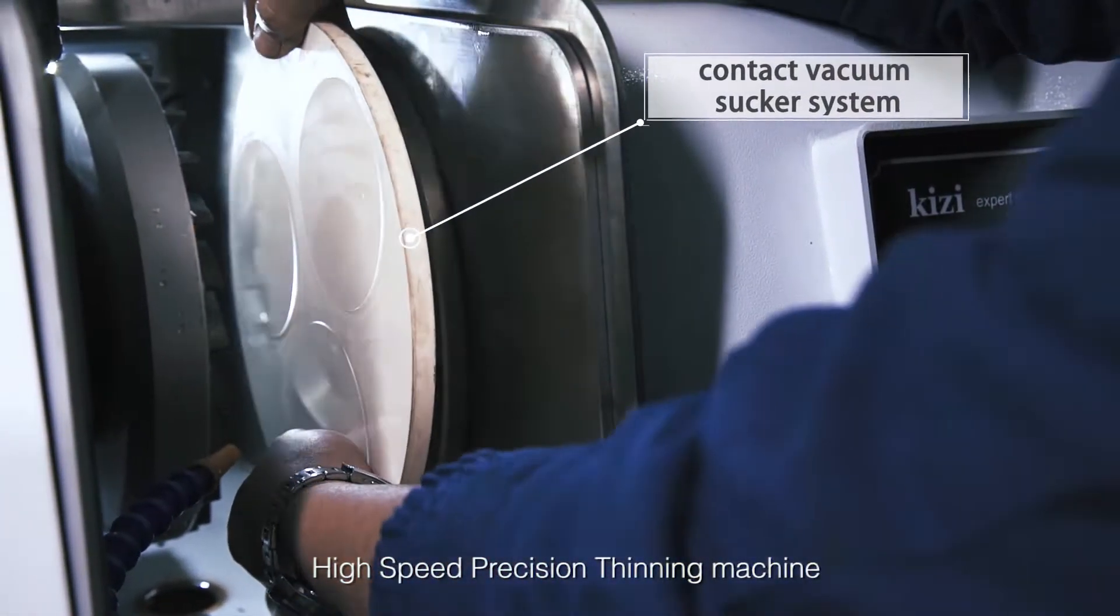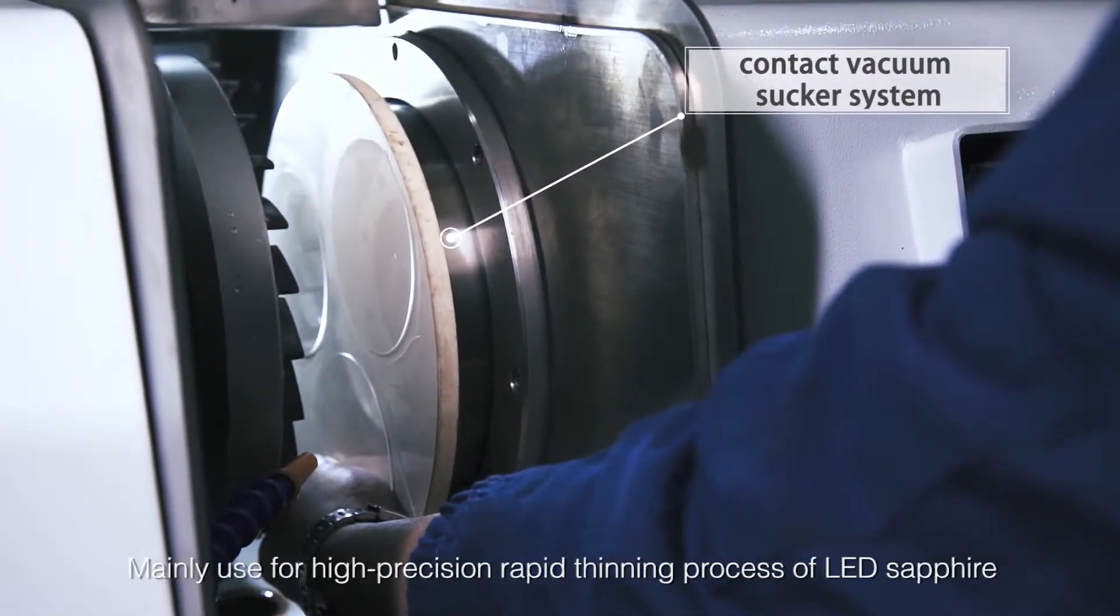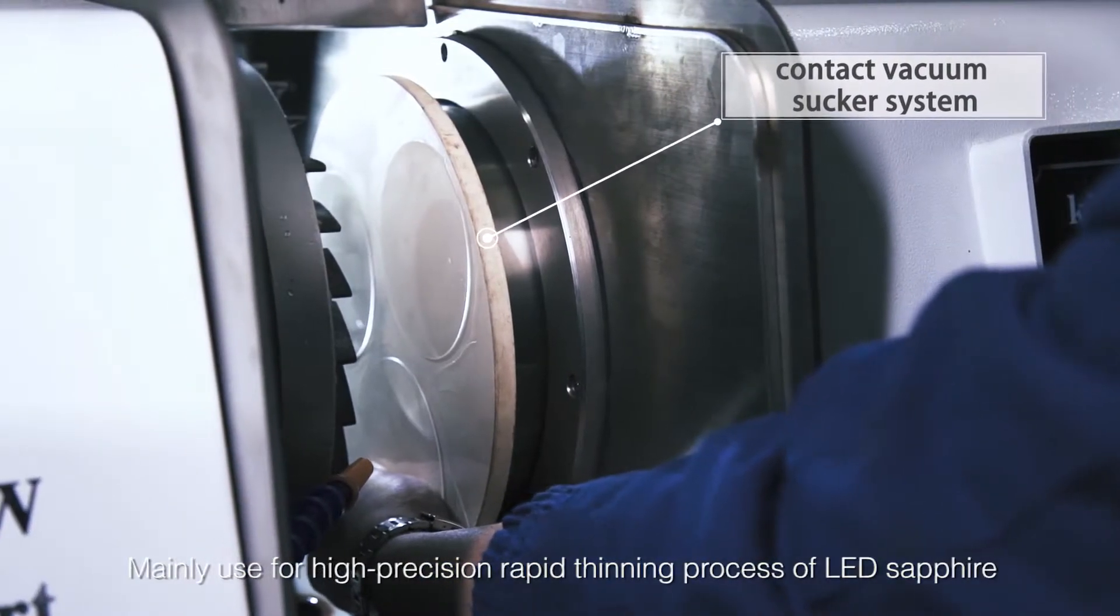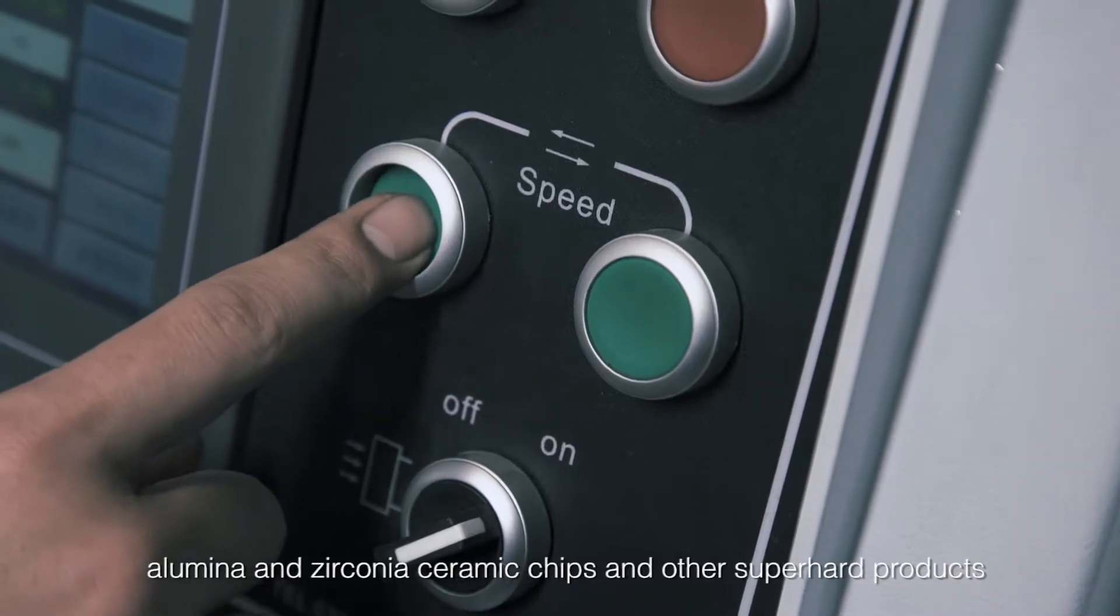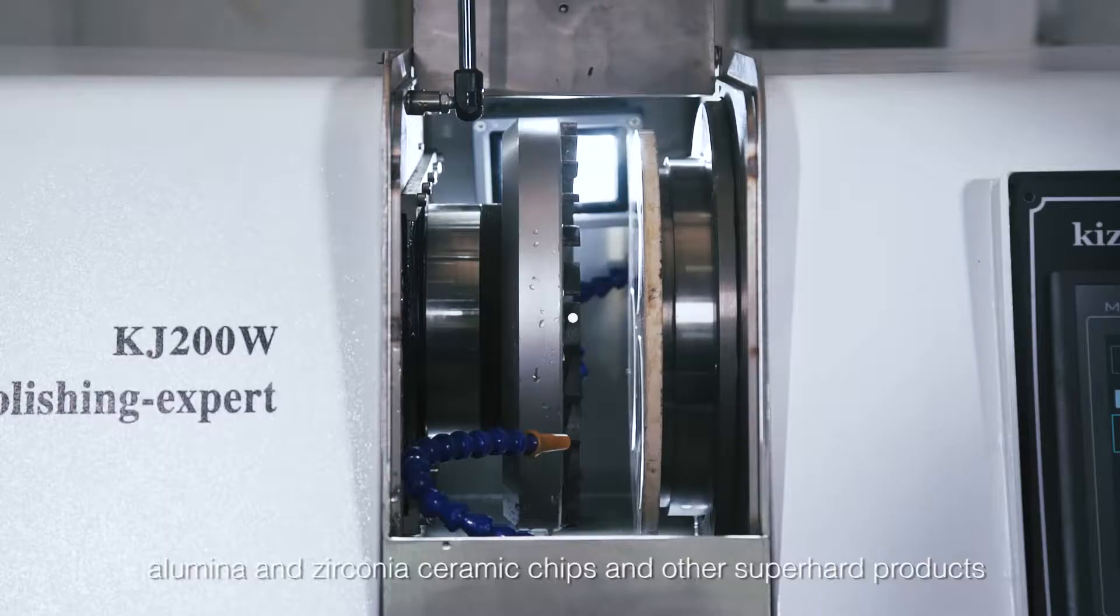High-Speed Precision Thinning Machine. Mainly used for high-precision rapid thinning process of LED sapphire chips, alumina and zirconia ceramic chips and other super hard products.